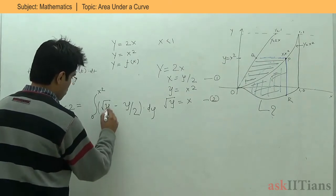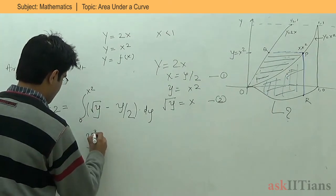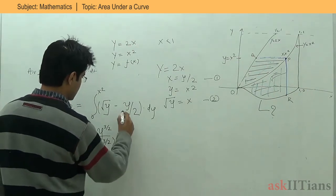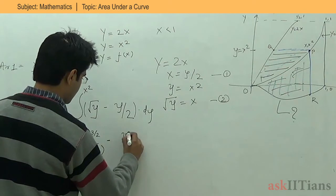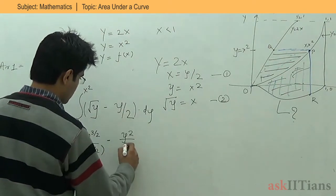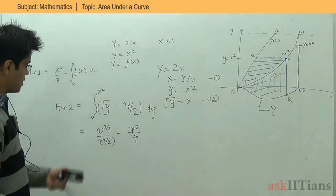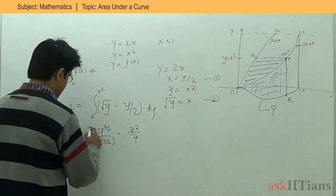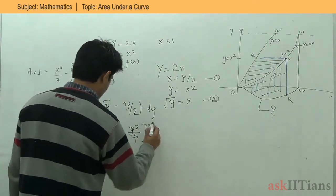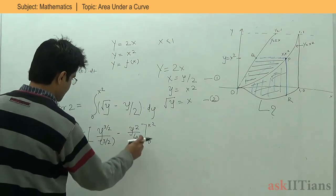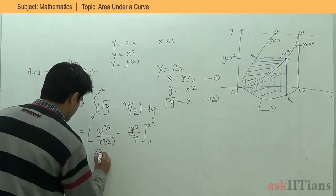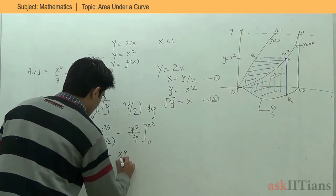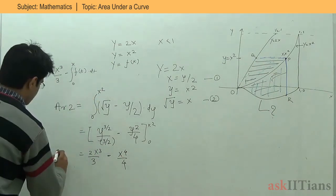We can integrate simply. The integral of root Y gives Y to the power 3/2 upon 3/2, and the integral of Y by 2 gives Y squared upon 4. Putting limits from 0 to X square: substituting X square gives X cubed times 2 by 3, minus X to the power 4 upon 4. So Area 2 equals 2X cubed by 3 minus X to the power 4 by 4.